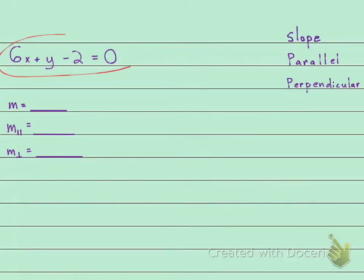We have a linear equation right here, and they're asking us to find the slope of the linear equation. They want us to find the parallel slope and the perpendicular slope. So if we had a line that was parallel and a line that was perpendicular.